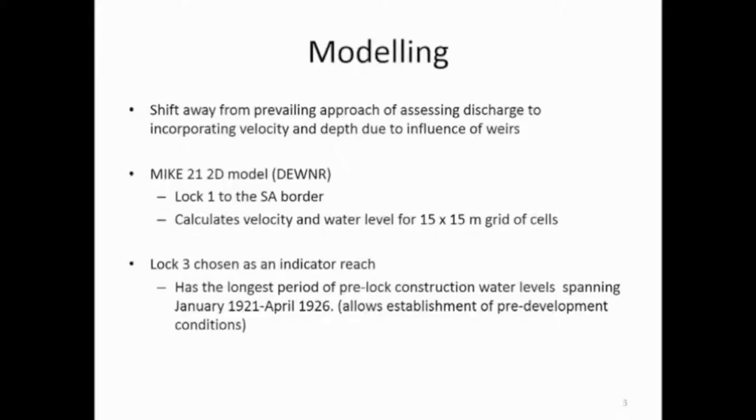The tool we used to do that investigation was the MIC-21 model, which is a 2D depth average model of the whole river that has been built. They've got it in little sections from the border, usually covering the different regions between the locks, and that model can calculate velocities and water levels for the River Murray. They use that for when you get floods, working out how high the water level will come and what pits will inundate. It's a tool that is available and we use it to help inform the questions that the ecologists had for setting the environmental water requirements.